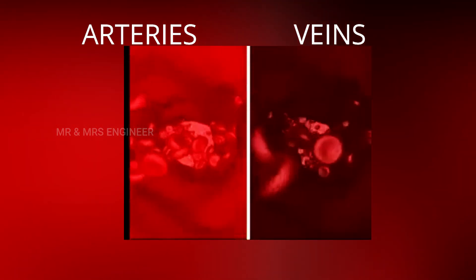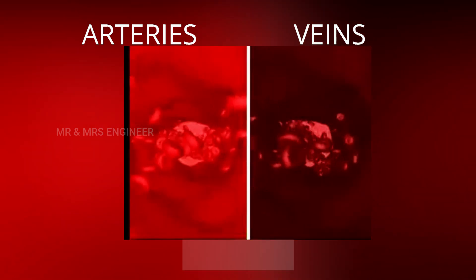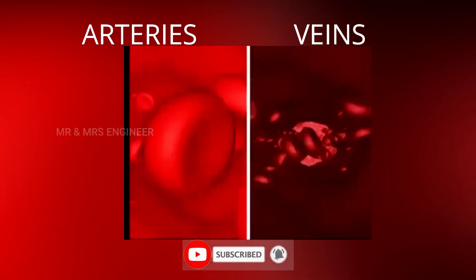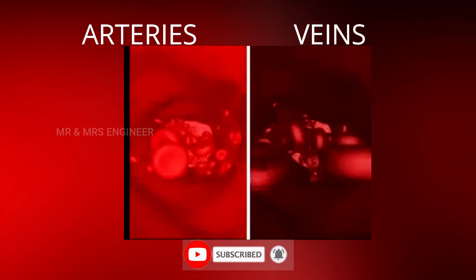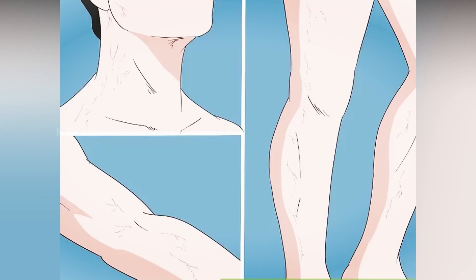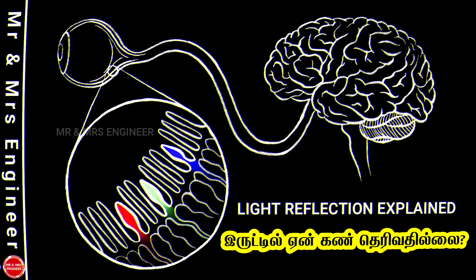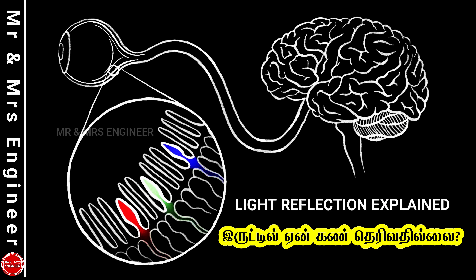So the veins are very thin. In arteries, the hemoglobin is very light and bright. In our veins, the veins appear very thin or green. Let's look at a video of our eyes — the link is in the description box. Click the link below.